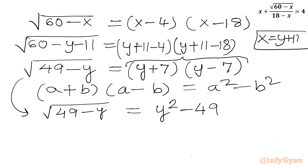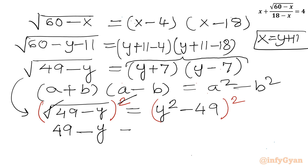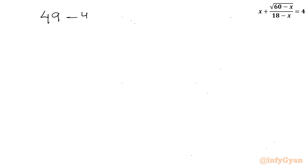Now I will square both sides — squaring the left-hand side cancels the square root. So I can write 49 minus y equal to (y squared minus 49) whole squared.